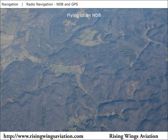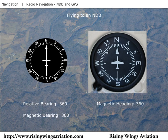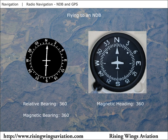To fly directly toward an NDB, first turn the airplane so the needle is pointing straight ahead — the airplane is now pointing directly at the NDB. Just like with VOR navigation, the airplane will soon drift off course without proper crosswind correction. The process is the same; the pilot only needs to understand the different display of information. Maintain your heading and observe the movement of the needle. If the needle moves right or left, you will have to turn your airplane right or left to stop the airplane from drifting off course with the wind.